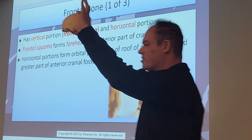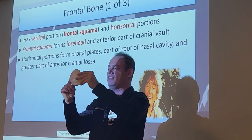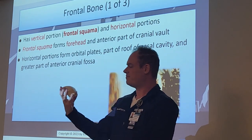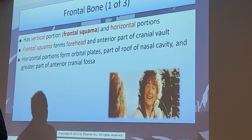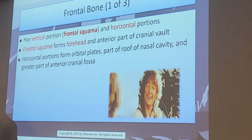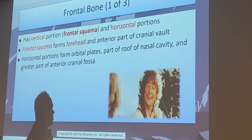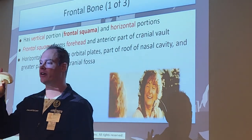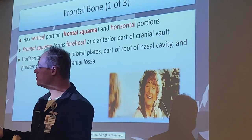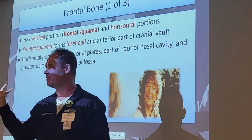Here's the frontal bone removed from the skull - it goes right here. There are little tops of the orbits right here. There's a vertical portion called the frontal squama, and there are horizontal portions. The frontal squama forms the forehead, the anterior part of the cranial vault. The horizontal portions form what we call the orbital plates, which are a portion of the cranial bones that form the orbits.